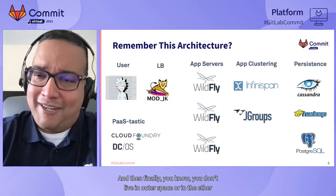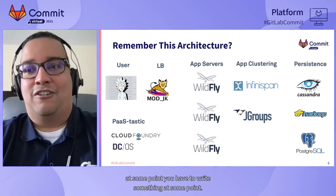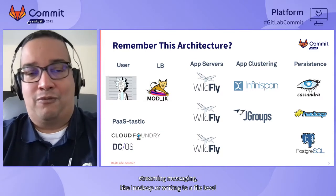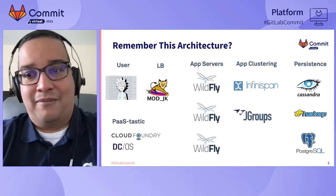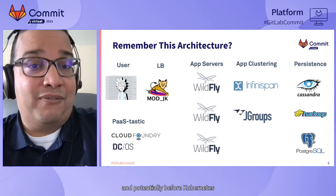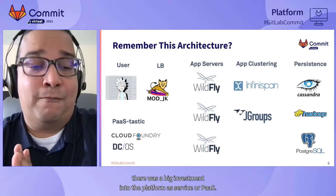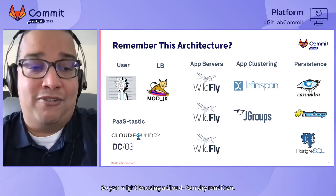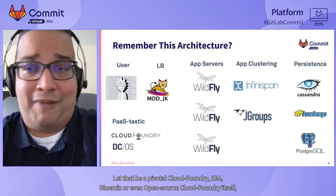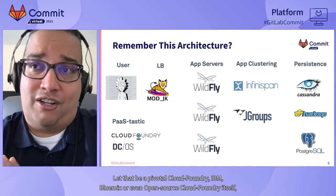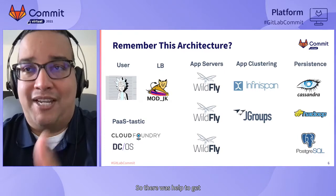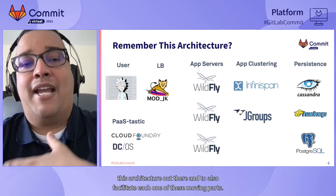In the Java stack, you might use in-memory caches like Infinispan, or clustering and consensus algorithms like JGroups. At the database layer you might have streaming messaging like ActiveMQ, a file-level database like Cassandra, or PostgreSQL. Before Kubernetes there was also big investment in Platform as a Service — Cloud Foundry, Pivotal Cloud Foundry, IBM Bluemix, or Mesos DC/OS — all helping facilitate this architecture.